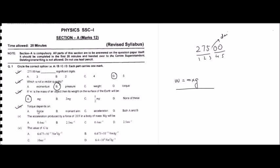Question number four: torque depends on which options? Options are: A — force, B — moment arm, C — acceleration, D — both A and B. First, write the formula of torque: torque equals force times moment arm.